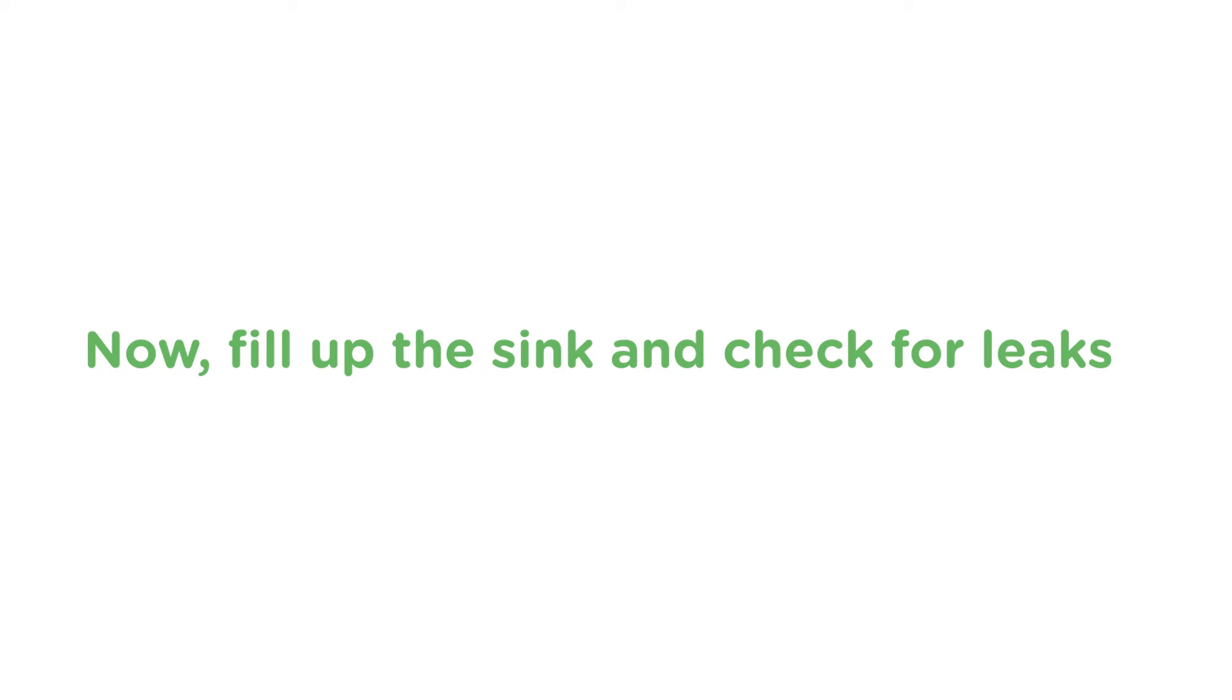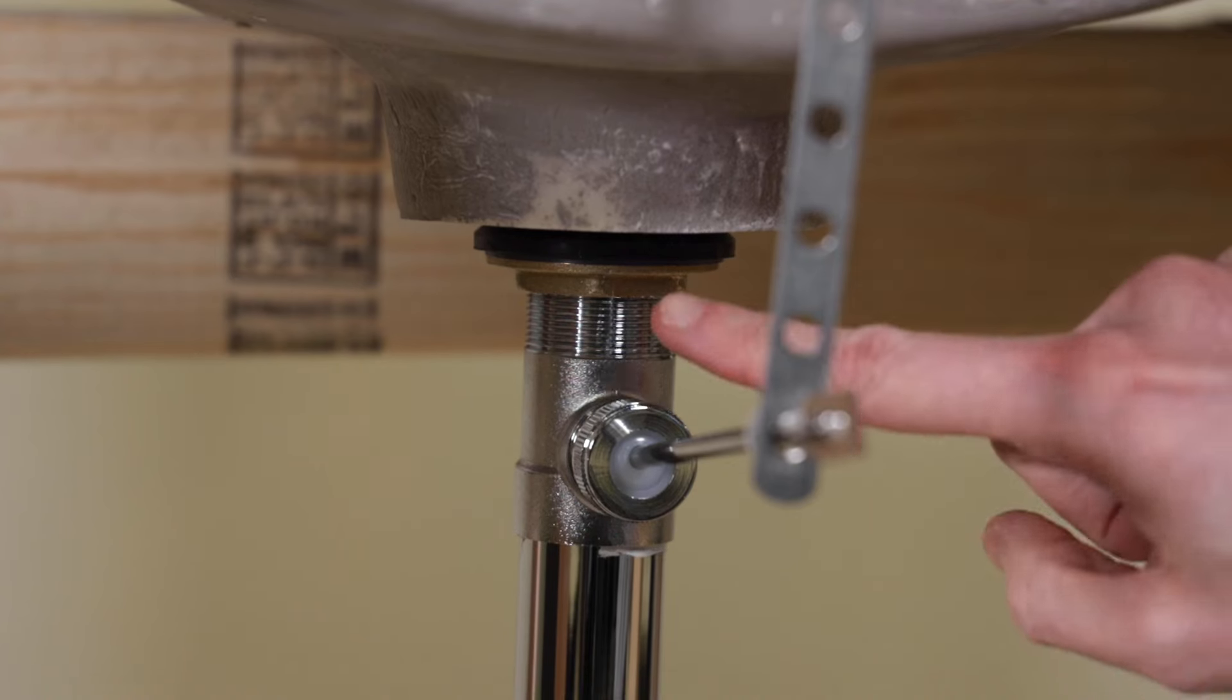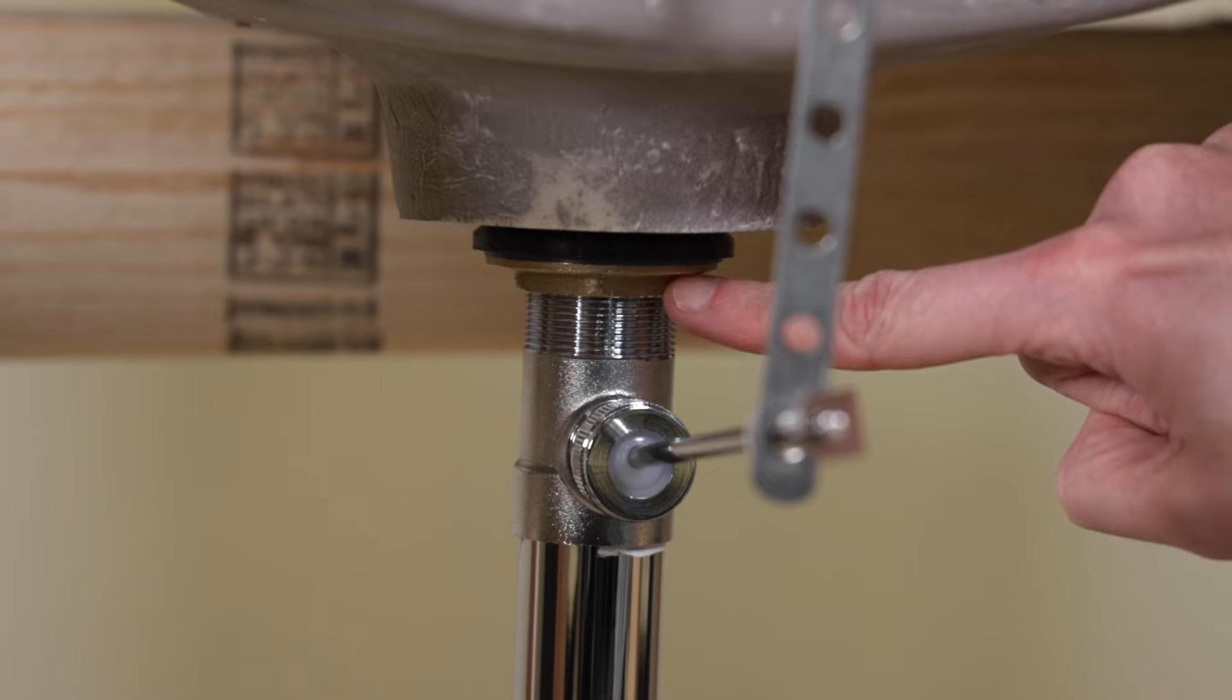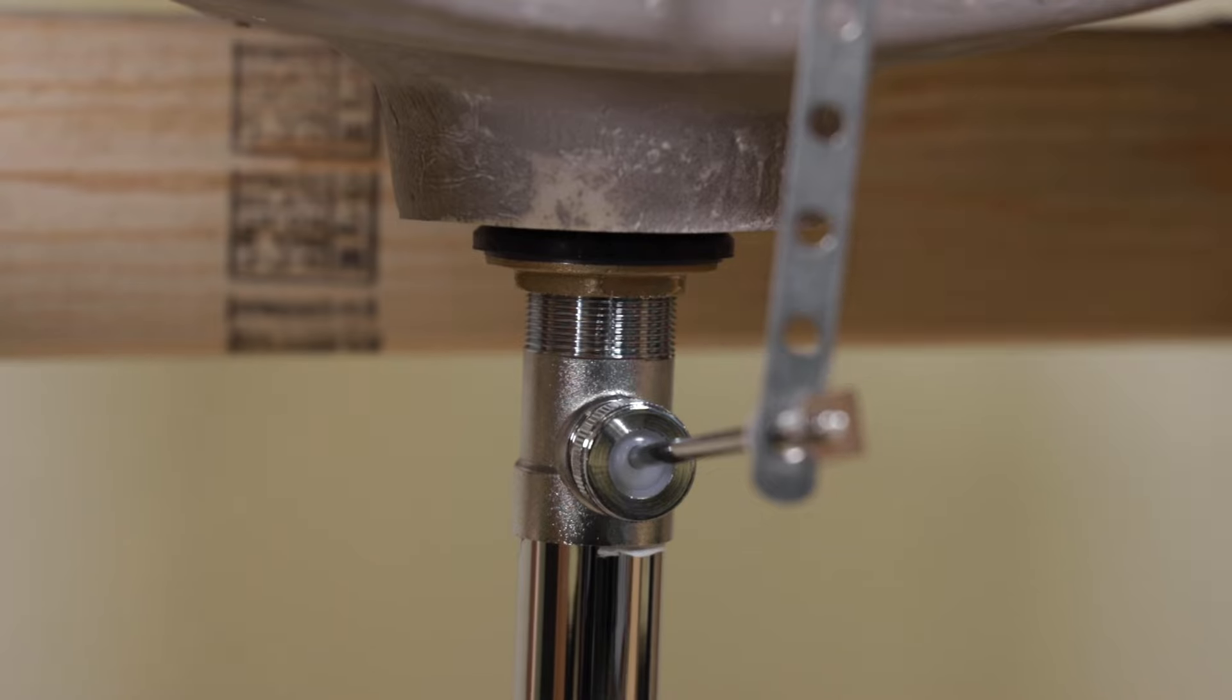Now fill up the sink and check for leaks. If you notice water weeping at the beveled washer, snug up the brass nut. Sometimes it helps to run a little warm water for a few minutes to soften up the rubber a bit to get a better seal.